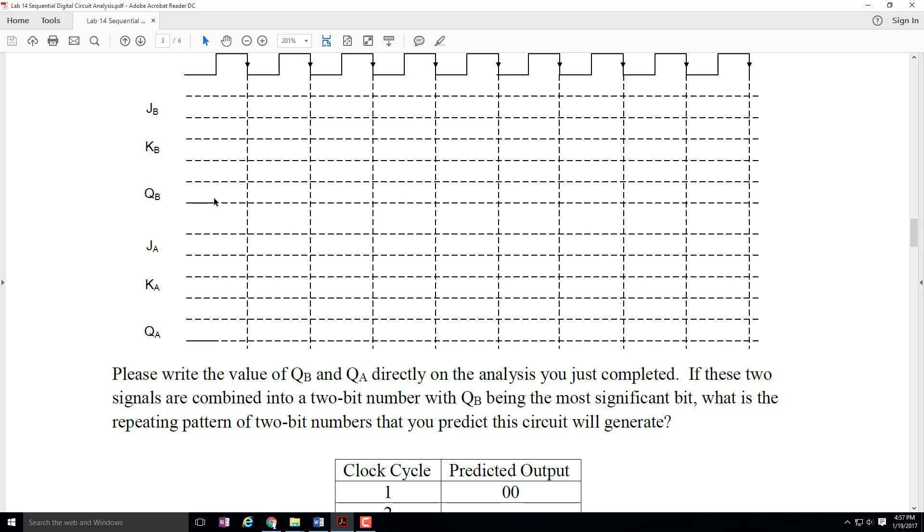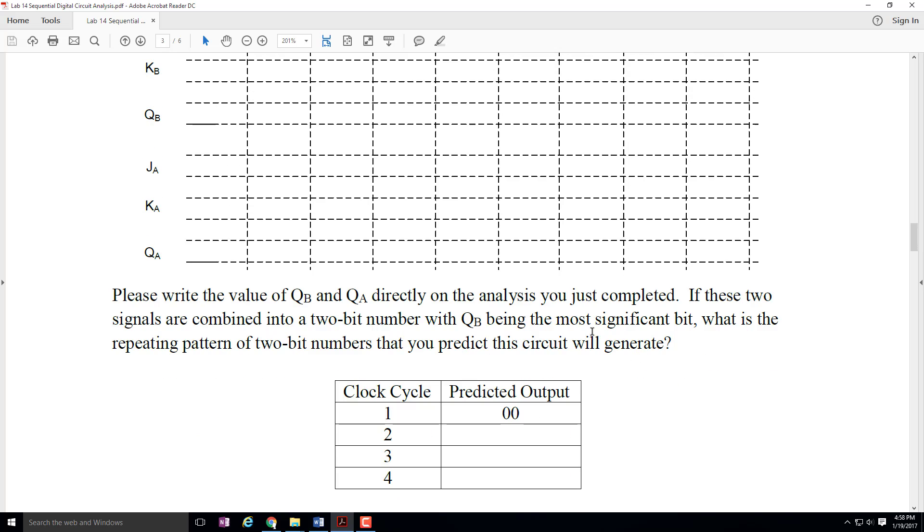For example, right here I might write 0, because Q sub B contains a 0. If it goes to a 1, I would put a 1 in this box, and I would put a 1, for example, in this box. I just want you to show me the string of ones and zeros for Q sub B, and then the string of ones and zeros for Q sub A. Then I want you to figure out what pattern is going to appear on Q sub B and Q sub A. It should be a pretty familiar pattern, but I want you to figure out what it is.